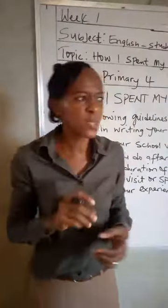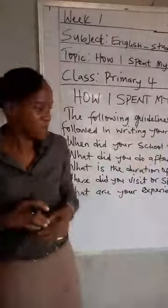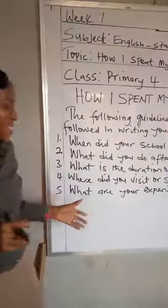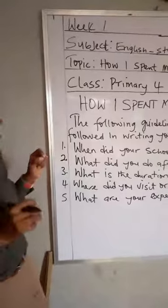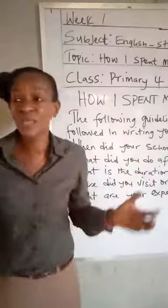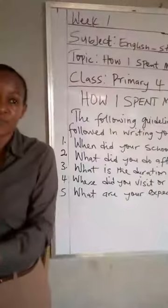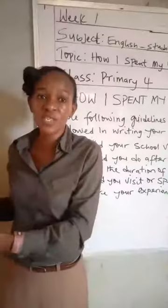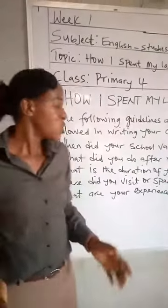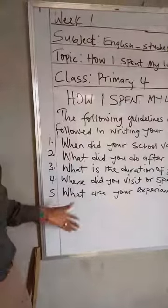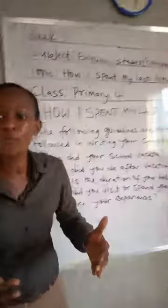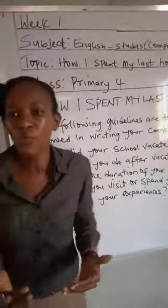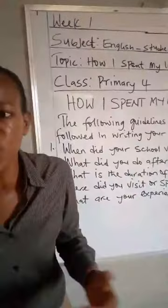I want to clarify something. We are not just listing these guidelines for you to fill in like a form. Some of you will just say: number one, where did you visit, and fill it in. That is meant for lower primary pupils or those in KG or nursery classes. If you see this type of guideline, it doesn't mean you begin to itemize your composition. You must make sure you give a comprehensive write-up.